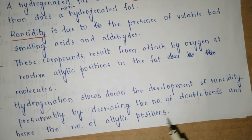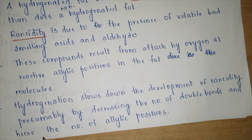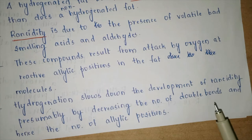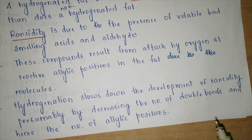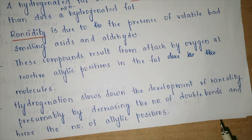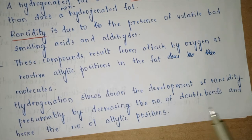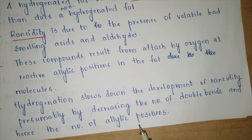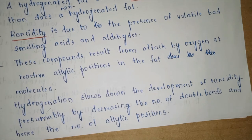Hydrogenation slows down the development of rancidity because oxygen cannot attack the double bond. By decreasing the number of double bonds — where oxygen attacks — the number of allylic positions is also decreased, resulting in less rancidity and the ability to store the oil for a longer period.